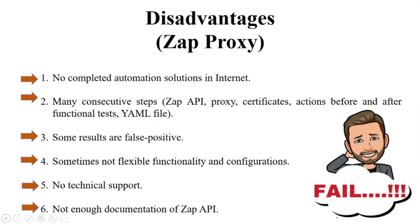Documentation is not the best and doesn't provide many real-world examples. Even if you find a complete project, you can't activate it without additional configurations. When you create a whole ZAP automation framework, the code itself is not complicated, but you need to combine many additional steps and configurations — including proxy, certificates, config files, and ZAP actions before and after the functional test.